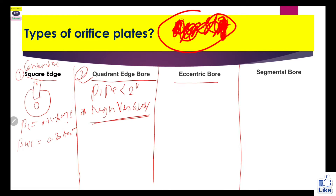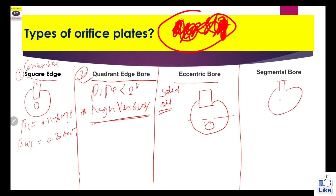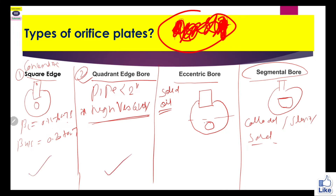Eccentric bore is also very important. In the eccentric bore, the middle line is visible and the hole is positioned below that middle line. The application of eccentric bore: whenever solid or oily material is present in any fluid, the eccentric type orifice plate can be used and it will work effectively. For segmental type, the bore construction looks like a segment. It is used whenever your fluid is colloidal, slurry, or may contain solids. So these are the four types of orifice plate generally used.